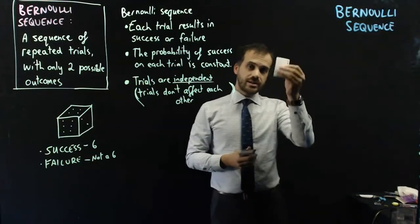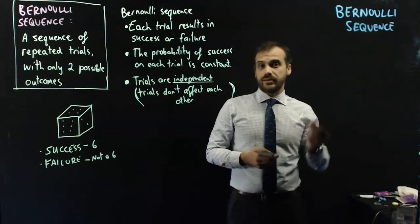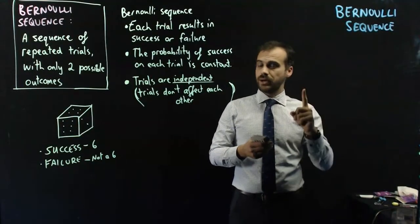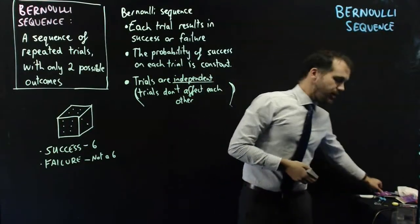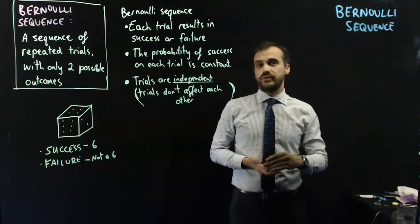So, success. Now, I'm going to take that card and I'm going to put it down here. And now, I'm going to pick another card. And this card will also be a success or a failure. But, the probability of success on each trial is constant. Now, when I picked out this ace, the probability of success was 4 in 52.